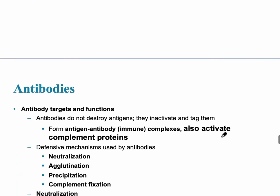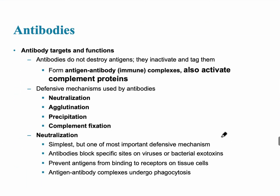So how do antibodies work? There are several steps. The first is neutralization — antibodies have a defense mechanism that neutralizes and causes precipitation of antigens by forming a complex with them. Then there is agglutination, which is clumping, followed by precipitation, and finally complement fixation.